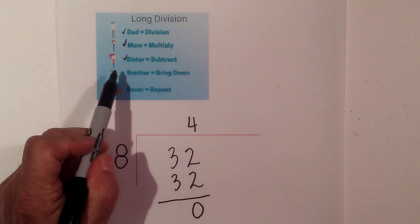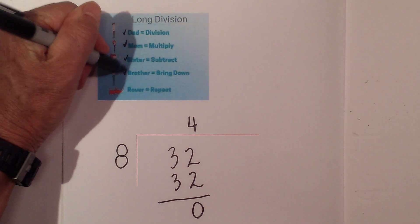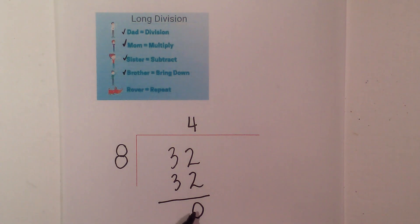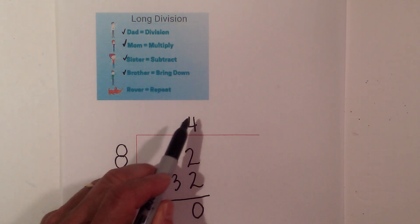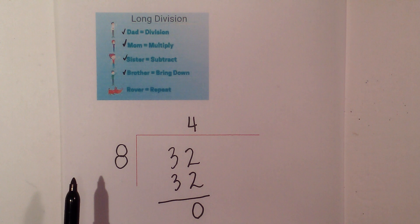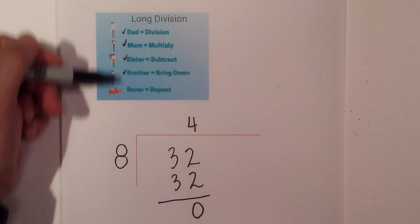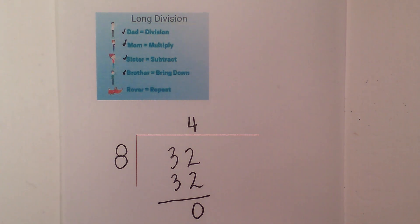The next step is to bring down, but since I have a 0 here I do not need to bring down nor repeat. So 32 divided by 8 is 4. Now let's work another example in which we will go through all of the steps of long division.